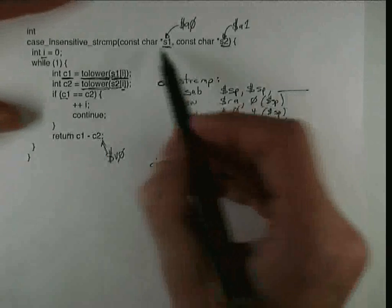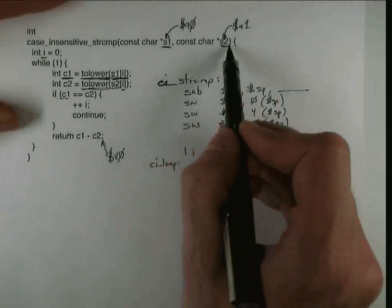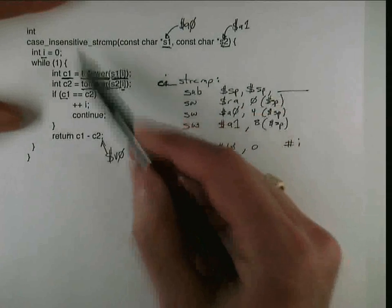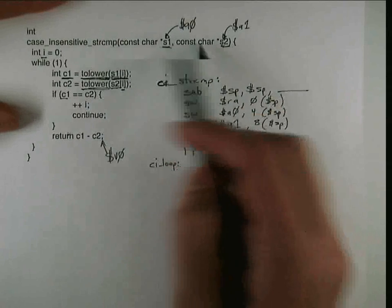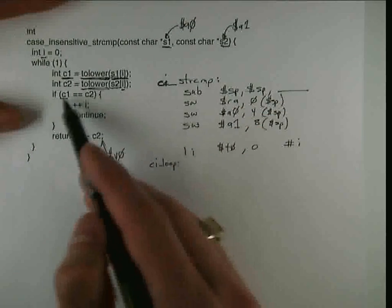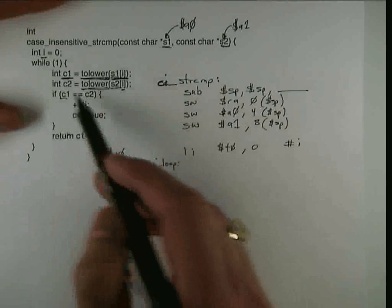So stepping back, what does this code do? We pass in two character arrays, also known as strings. And this one is supposed to say which one of them is alphabetically before the other. And so we compare the characters, one at a time in the string.